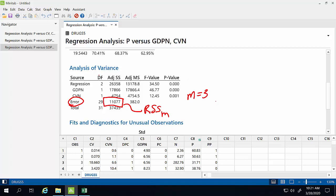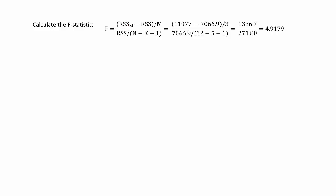We should now have everything needed to calculate the F-statistic. We've got the residual sum of squares from the constrained model — 11,077 — minus the residual sum of squares from the original model — 7,066.9 — close that off and divide by three, which is our number of variables left out of the constrained model. Divide that by the original residual sum of squares divided by 32 minus 5 minus 1. Doing the math, we end up with an F-statistic of 4.9179.